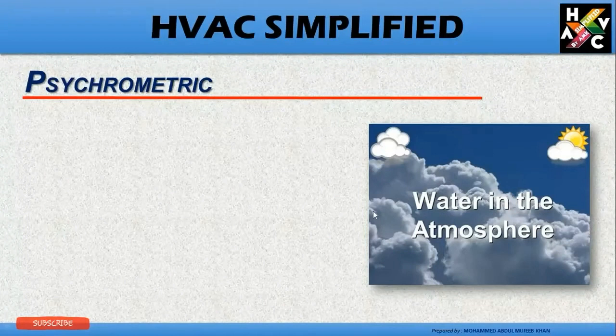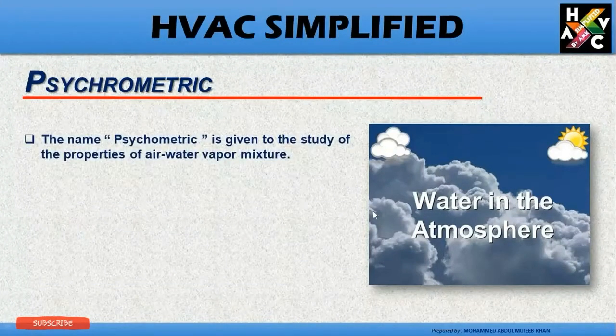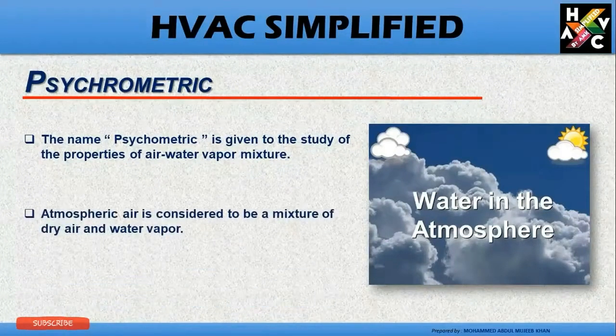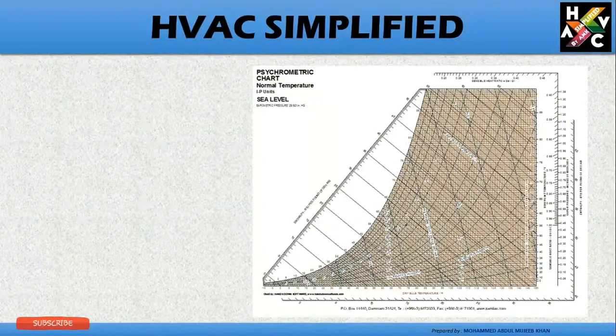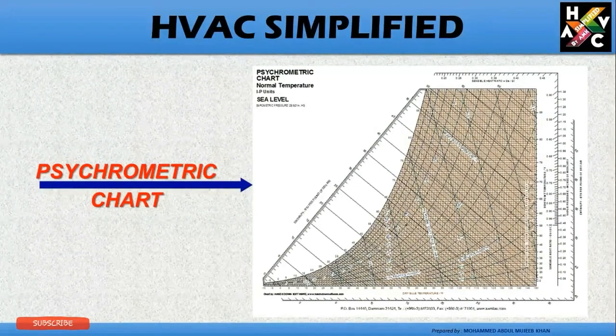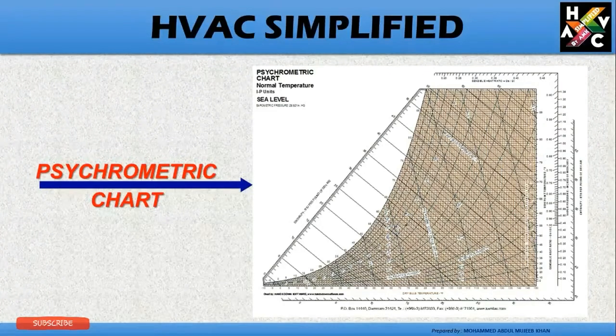So let us begin with part 2, which is psychrometric chart. The name psychrometric is given to the study of the properties of air water vapor mixture. Atmospheric air is considered to be mixture of dry air and water vapor. This is the representation of a psychrometric chart where you can see multiple lines and values on them, so we will understand all these properties one by one.